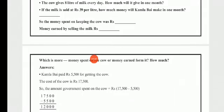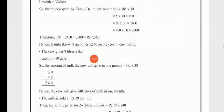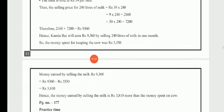The money spent on keeping the cow was Rs. 5,550 and the money earned by selling the milk is Rs. 9,360. So 9,360 minus 5,550 equals Rs. 3,810. The money earned by selling the milk is Rs. 3,810 more than the money spent on the cow.